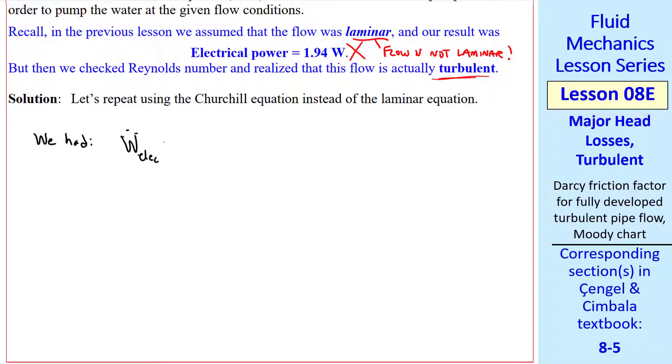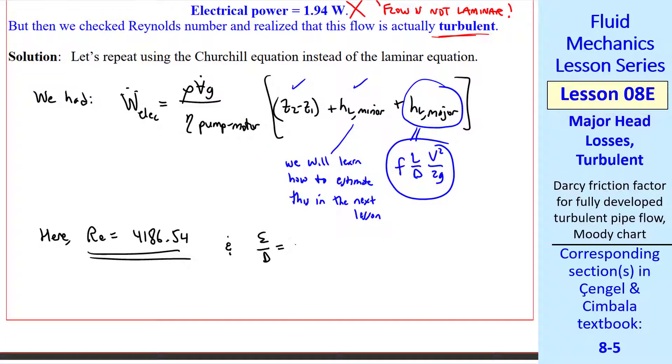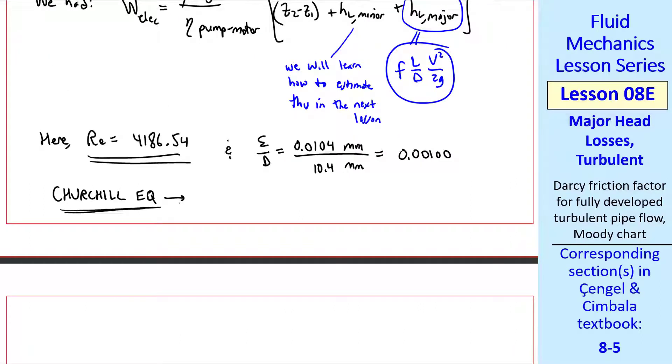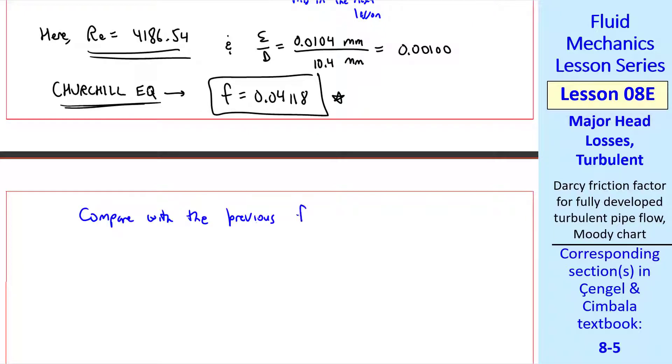We found out that it was turbulent. So we've already set up this problem. Water at 20 degrees C being pumped by a small pump through this pipe and also increasing the elevation of the water. I give all the same values as the previous lesson except I added a roughness inside the pipe. But all else is the same. And we want to calculate the same thing, the electrical power in watts that must be delivered to the pump motor in order to pump the water under these given flow conditions. Last time we got 1.94 watts, but this was wrong because the flow is not laminar. It's actually turbulent though just barely so. So now let's repeat using the Churchill equation instead of the laminar equation.